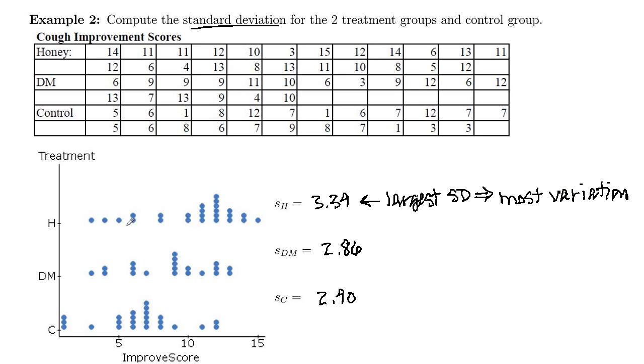And we can see that these are a little bit more spread out than the others. Although these are not really very far off. So we're seeing that this middle one looks like it has the least amount of variation overall.